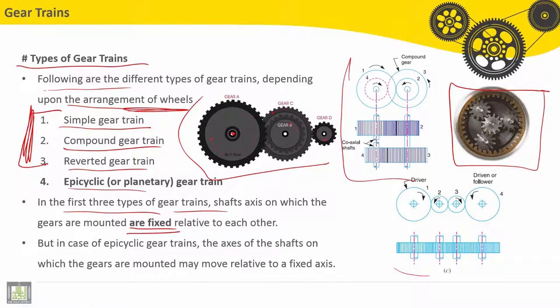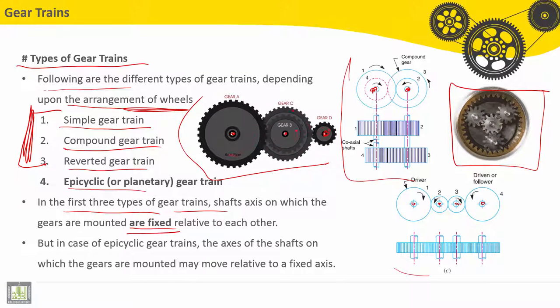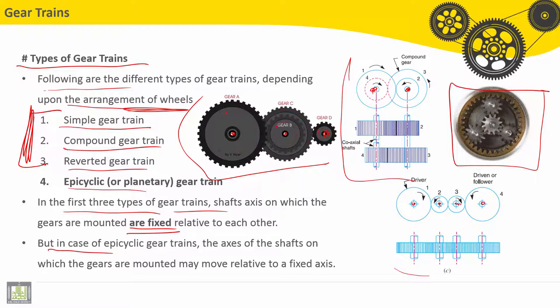We can see here clearly that all shaft axes are fixed and don't move. Only we can see gears are rotating. But in case of epicyclic gear trains, the axes of the shafts on which the gears are mounted may move relative to a fixed axis.